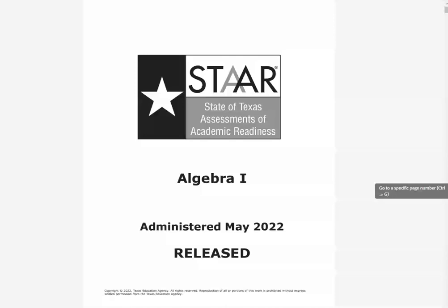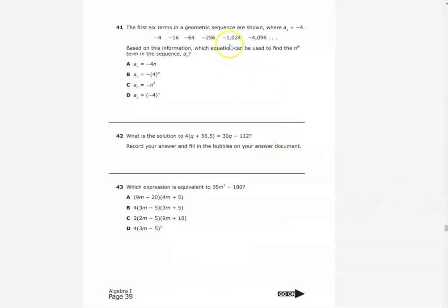The first item we're going to look at is item number 41 on page 39. And this is a geometric sequence. And we're going to use the Desmos graphing calculator to help us discover or determine which of these four equations best models this sequence. To do that, we're going to use, go to Desmos.com and get the testing version of their calculator.